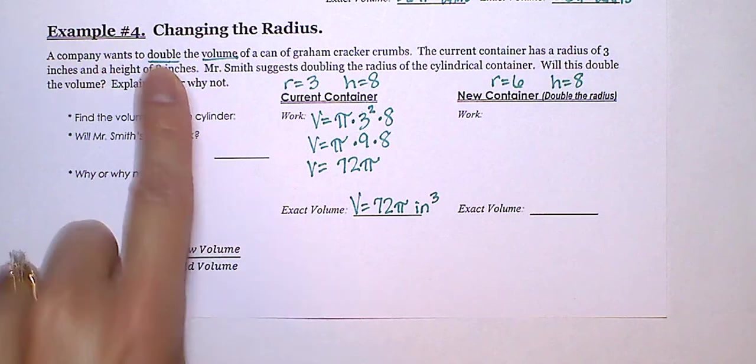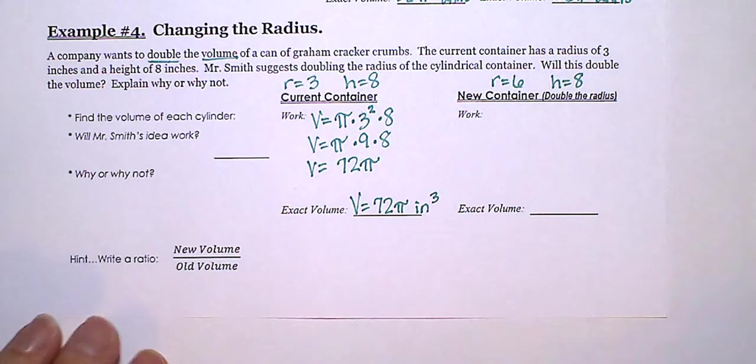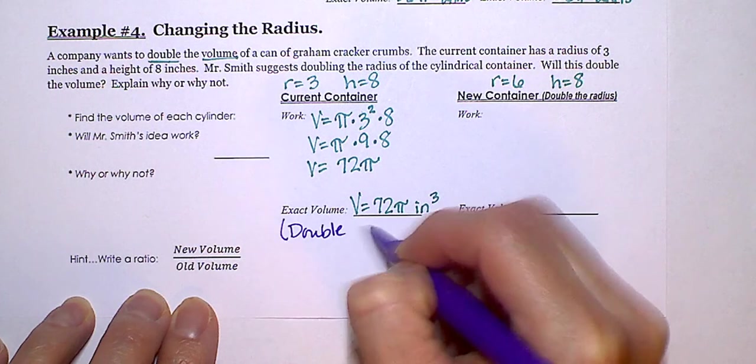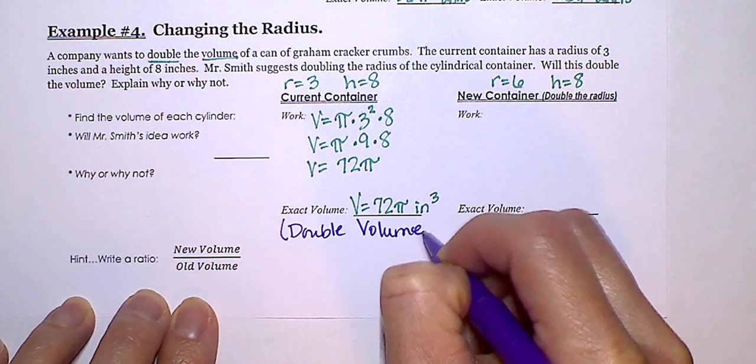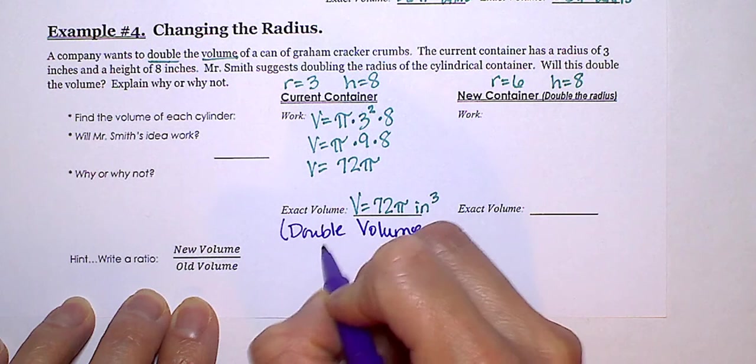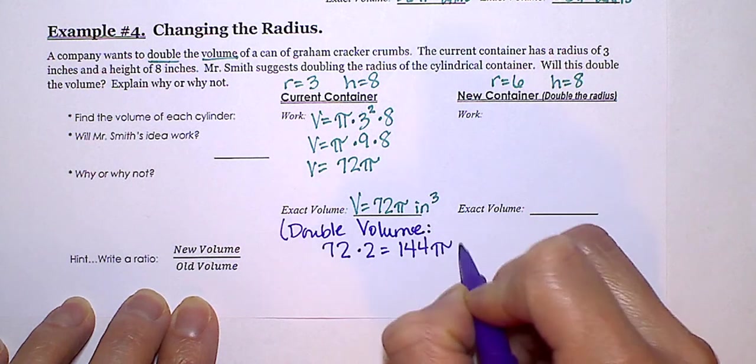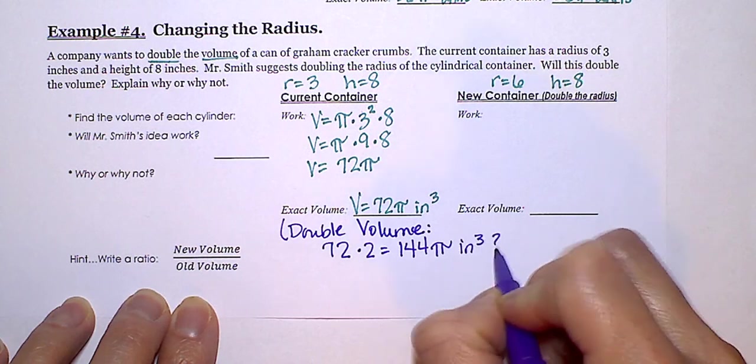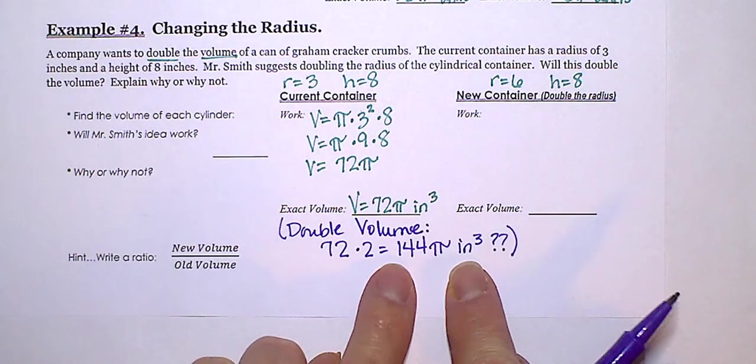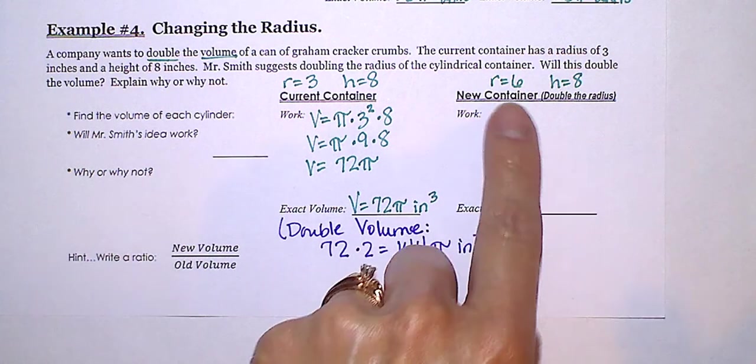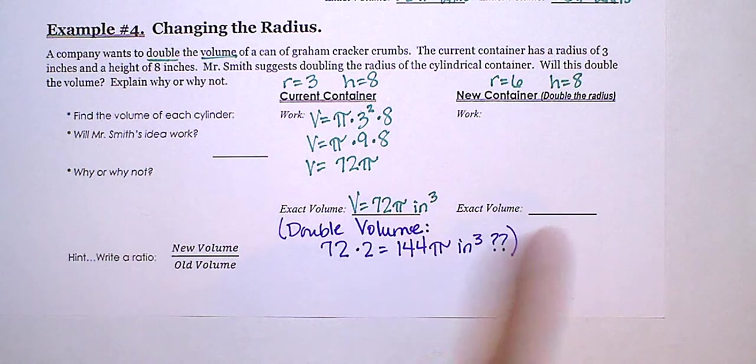Double the volume would mean to take 72 times 2. So we're trying to get 144 pi. That's what we want when they mean that we want to double the volume. So let's figure out if we plug in these numbers if we will get 144 pi.